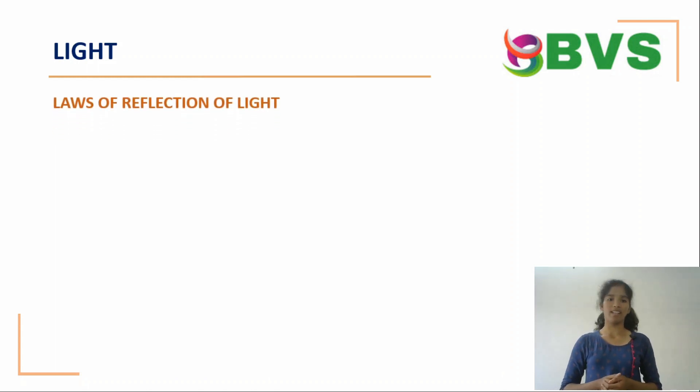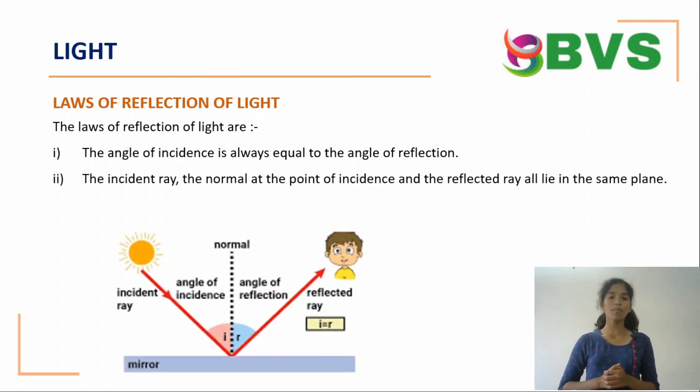Laws of reflection of light. The laws of reflection of light are: The angle of incidence is always equal to the angle of reflection. The incident ray, the normal at the point of incidence, and the reflected ray are in the same plane.